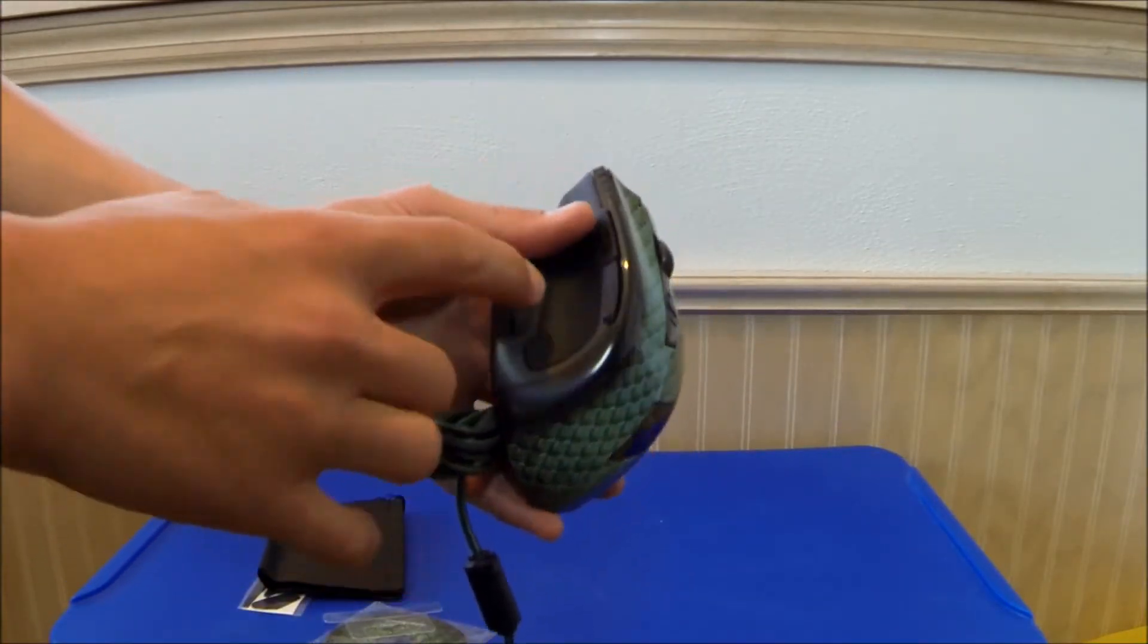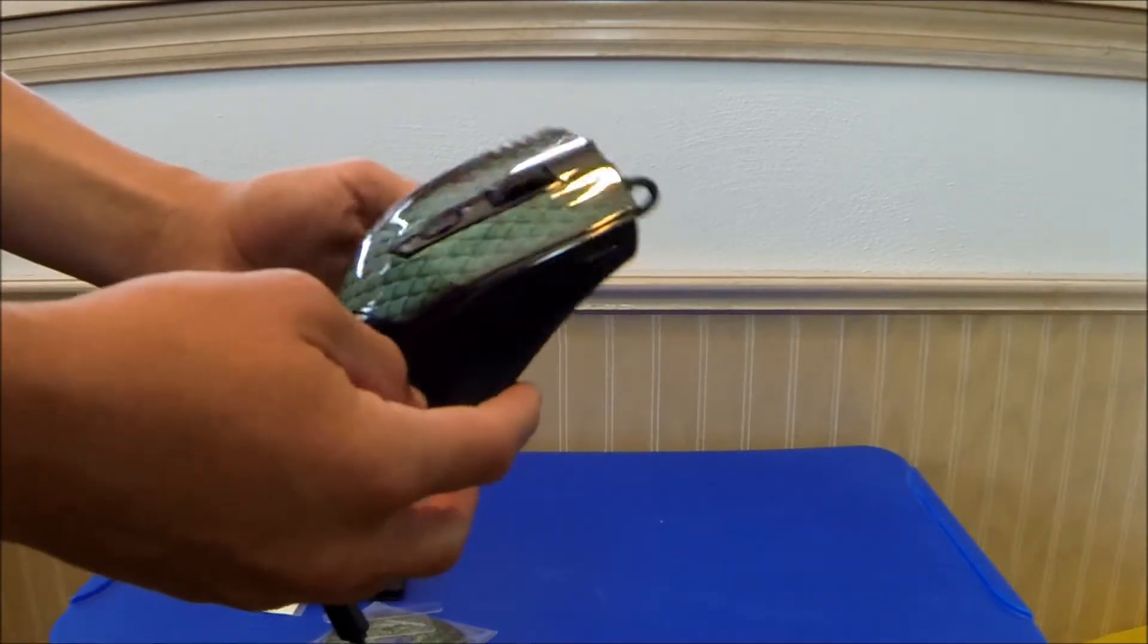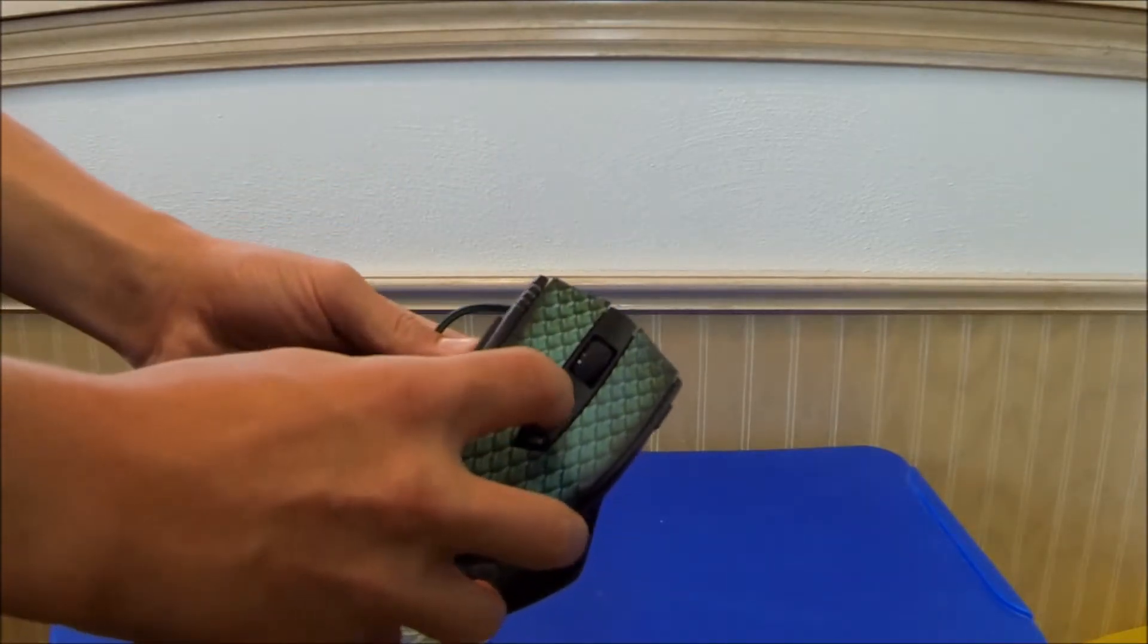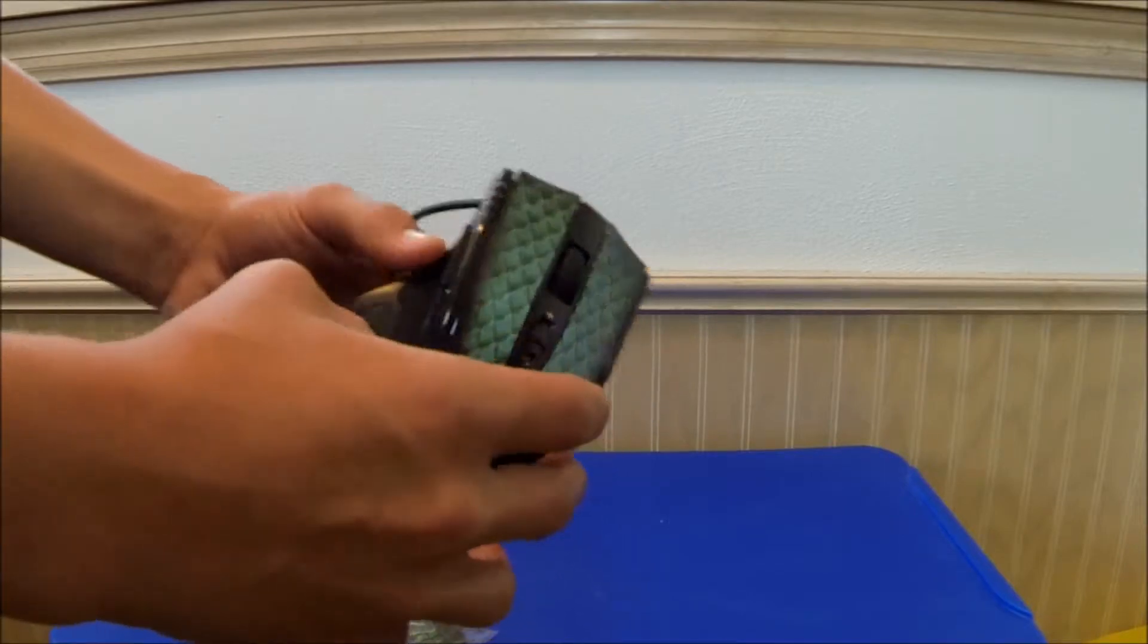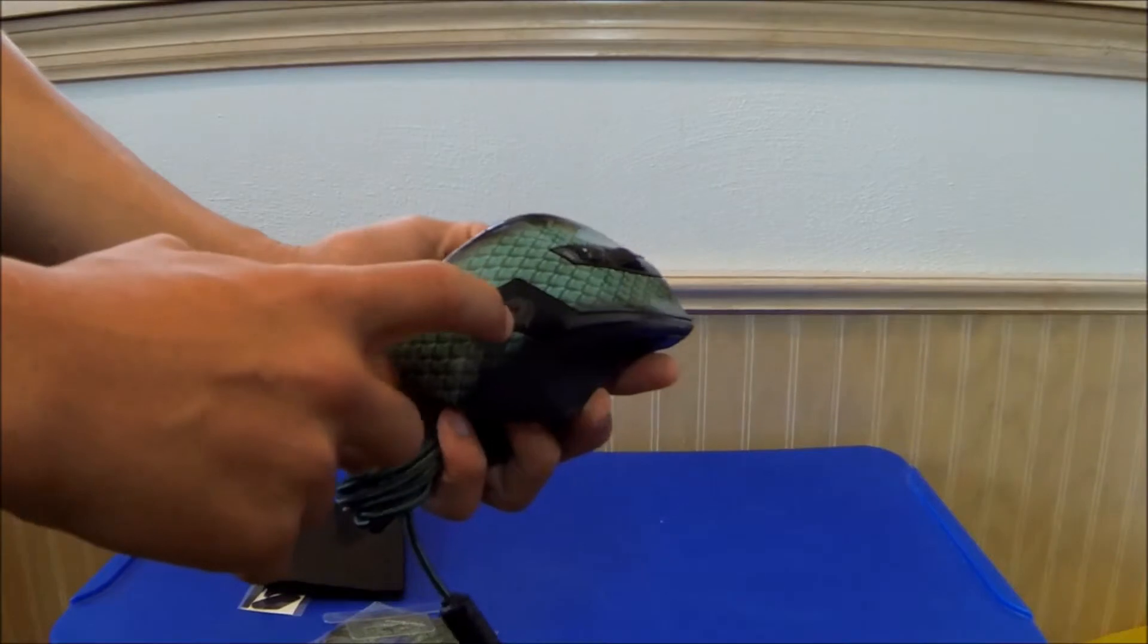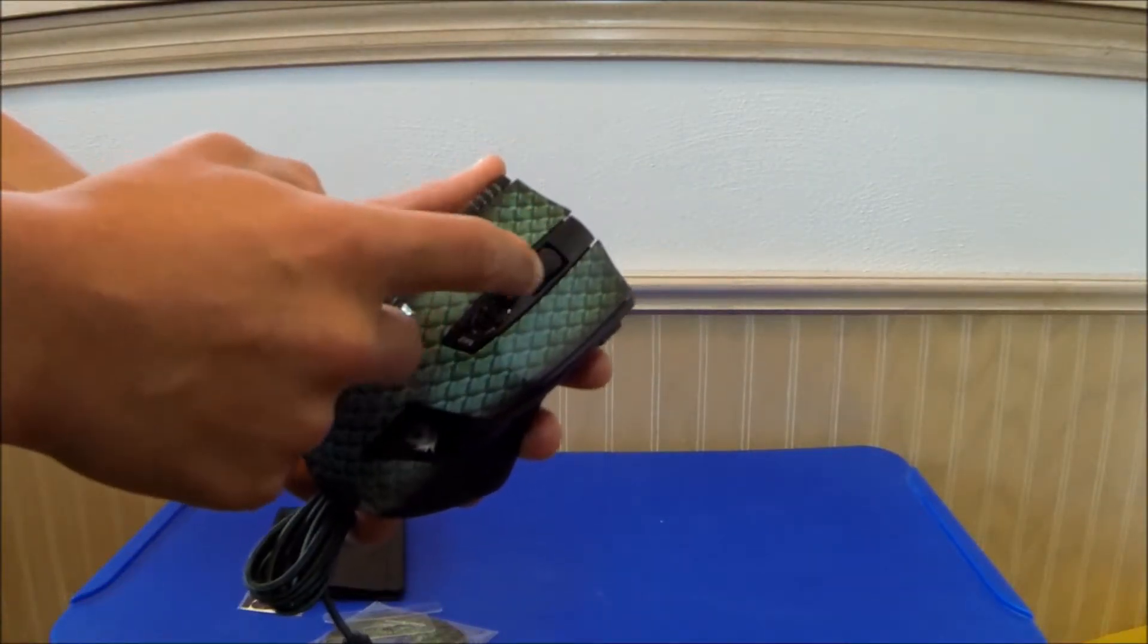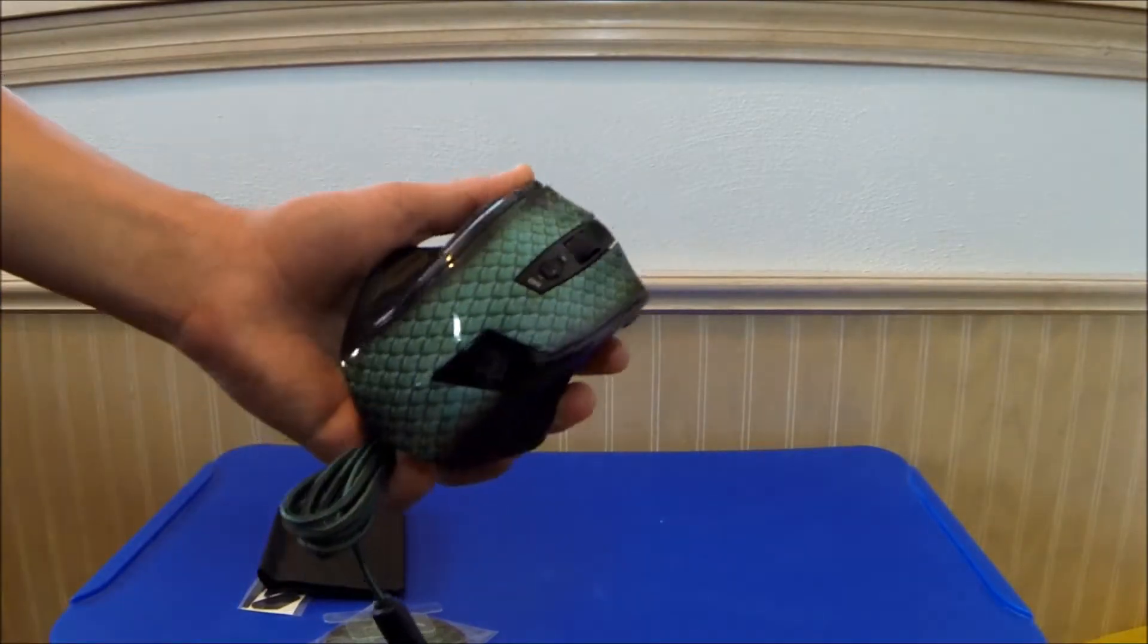It's got an extra button here, here, here, and here, and it's got a DPI switch here. It's got four DPI indication lights there. There is an LED that you can change the color with, and it is a four-way scroll wheel plus middle mouse.